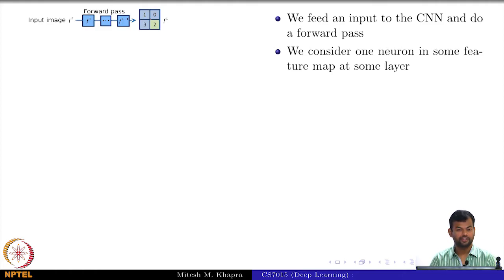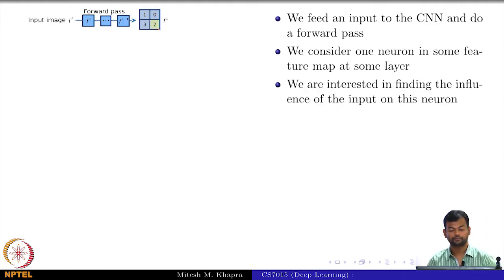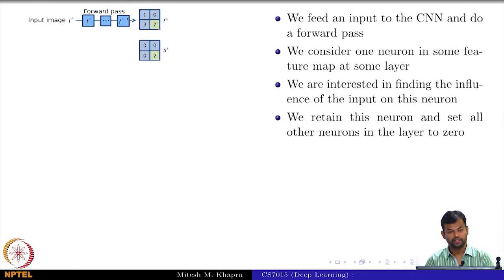We consider one neuron in some feature map at some layer. We will consider this particular neuron and we are interested in finding the influence of the input on this neuron. So what I will do is set all the other neurons in this layer to zero because I do not care about them. I only care about this particular neuron, I will just focus on that.